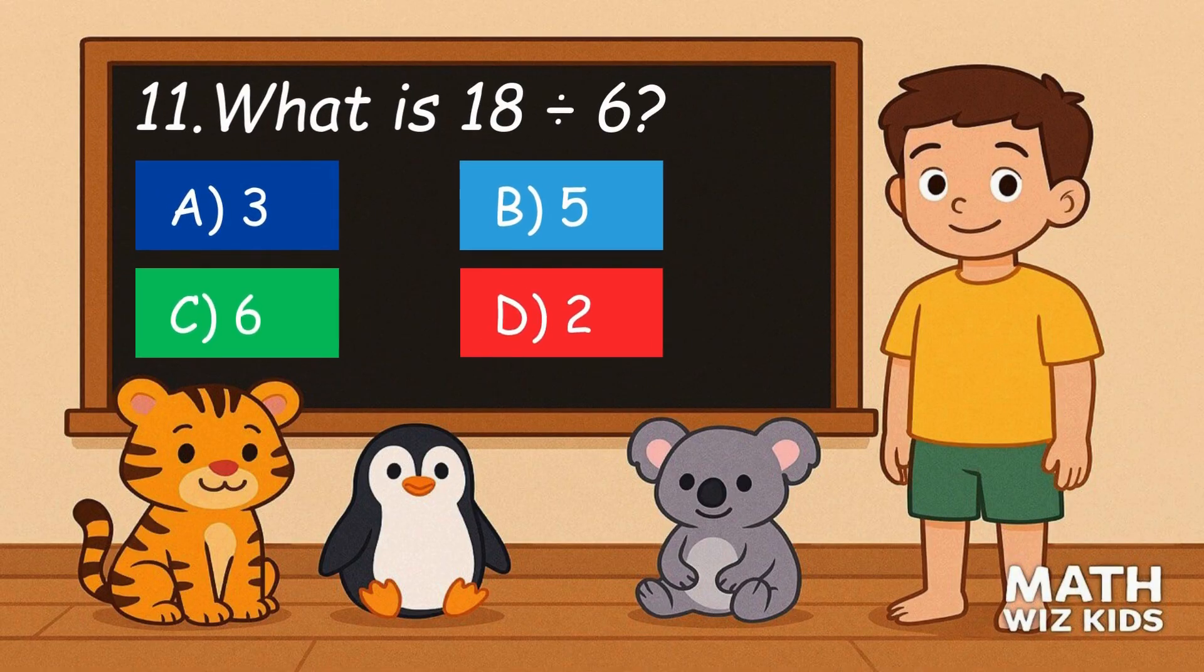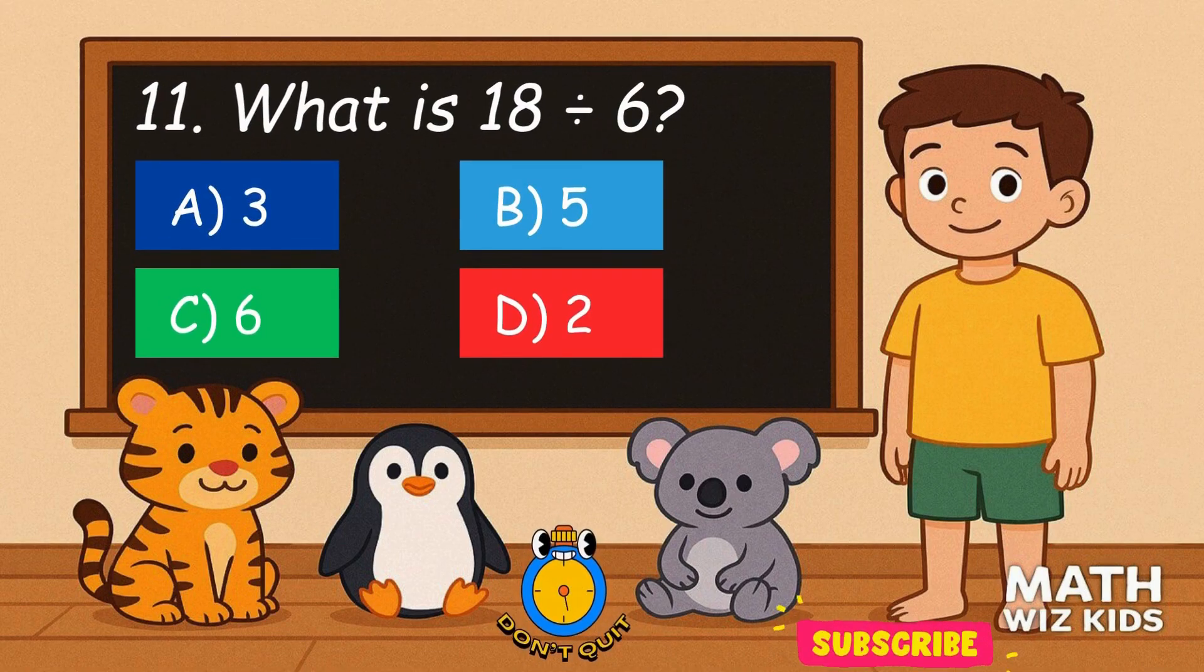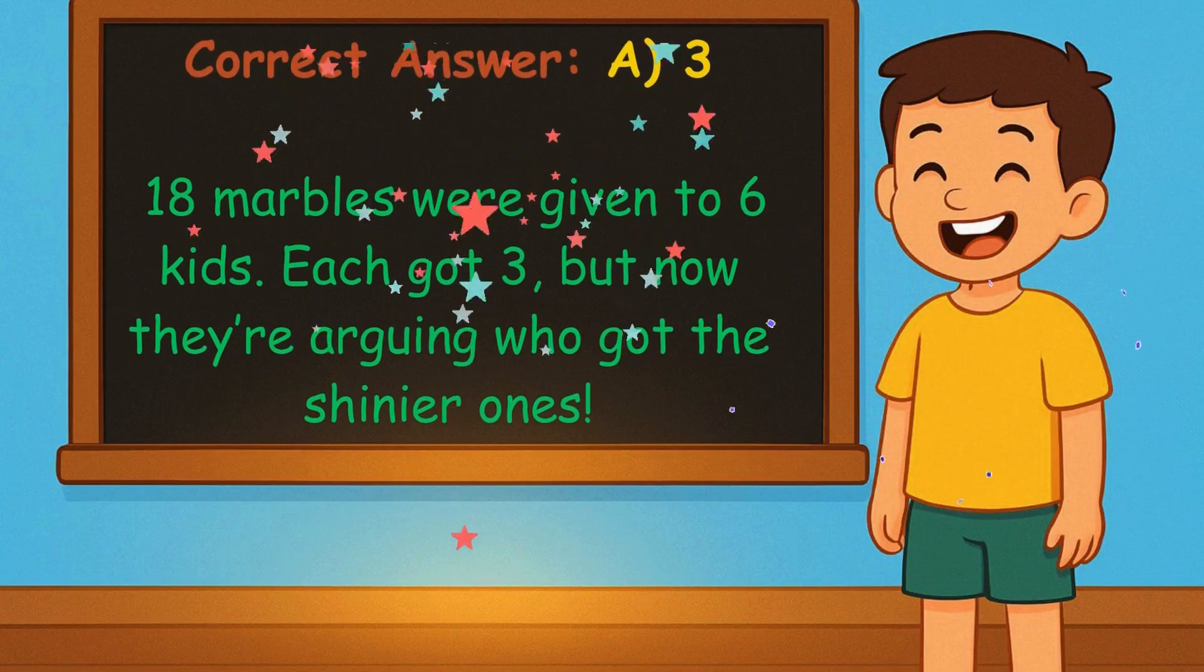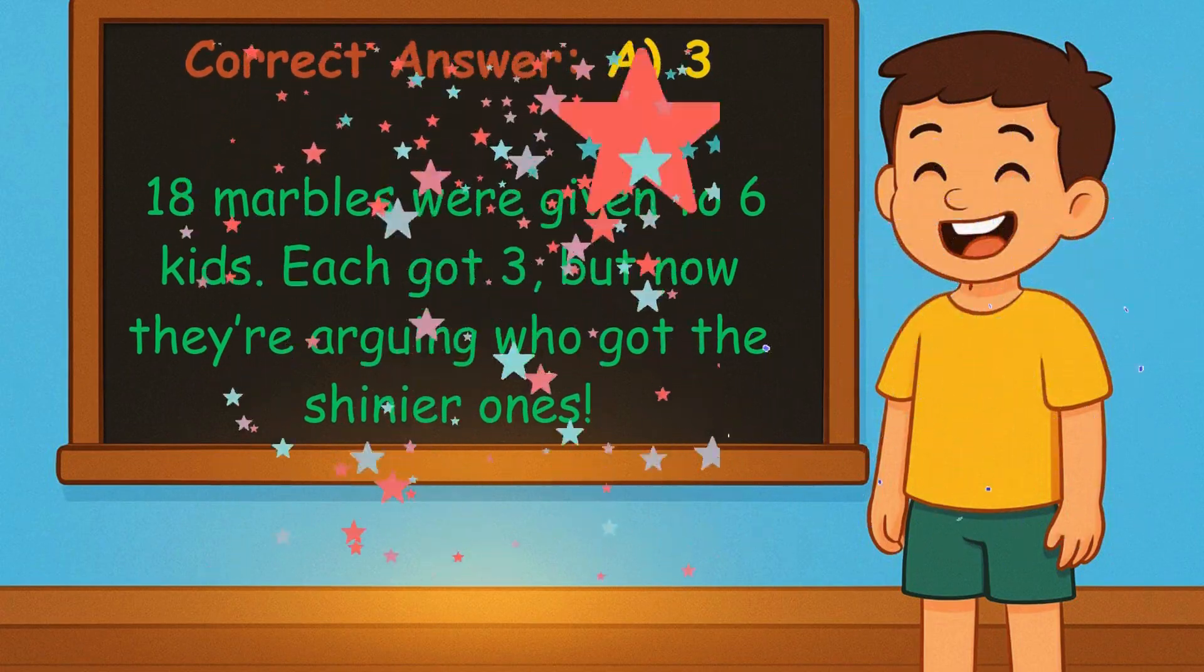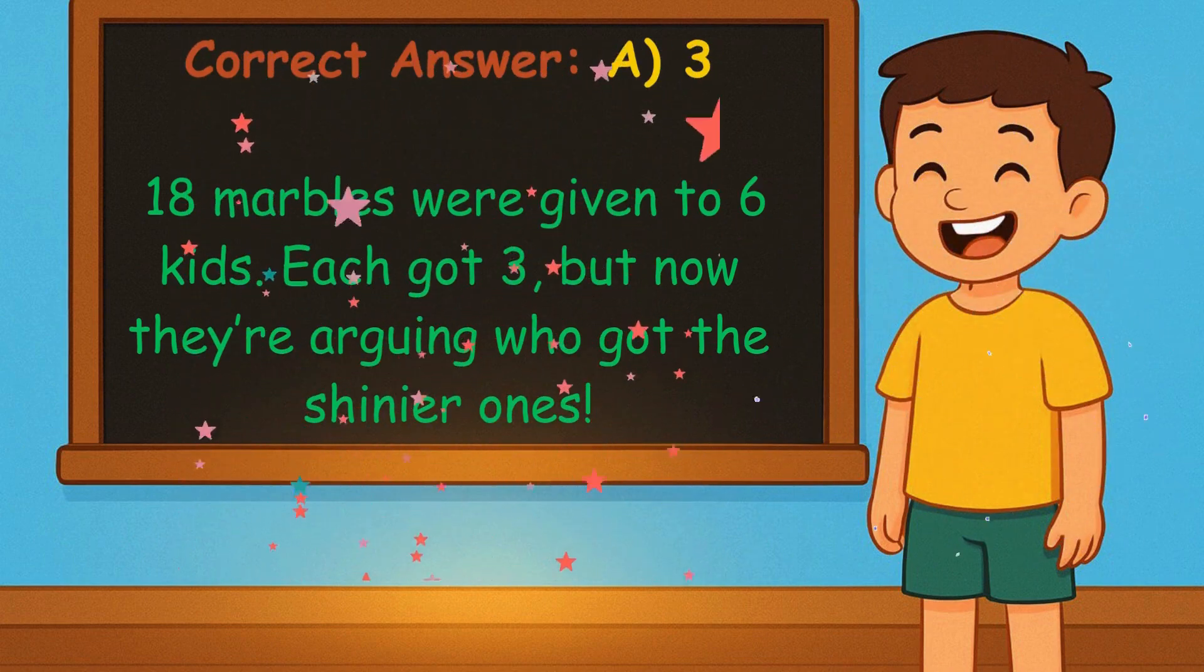11. What is 18 divided by 6? Is it A, 3, B, 5, C, 6, or D, 2? Correct answer is 3. 18 marbles were given to six kids. Each got 3, but now they're arguing who got the shinier ones.